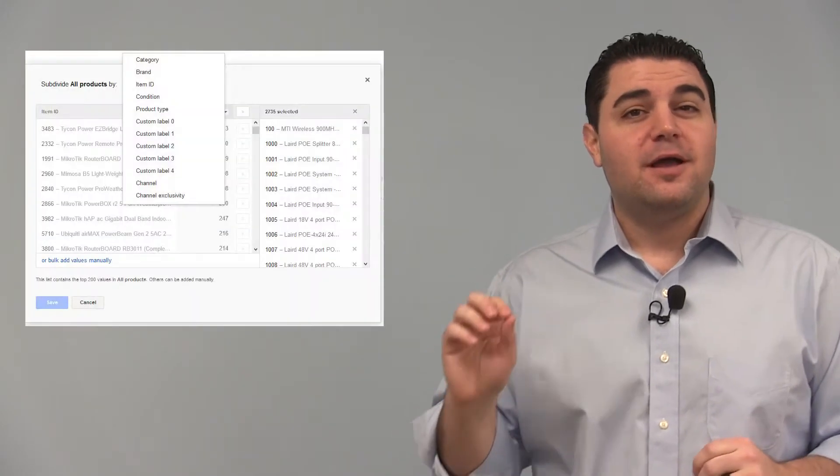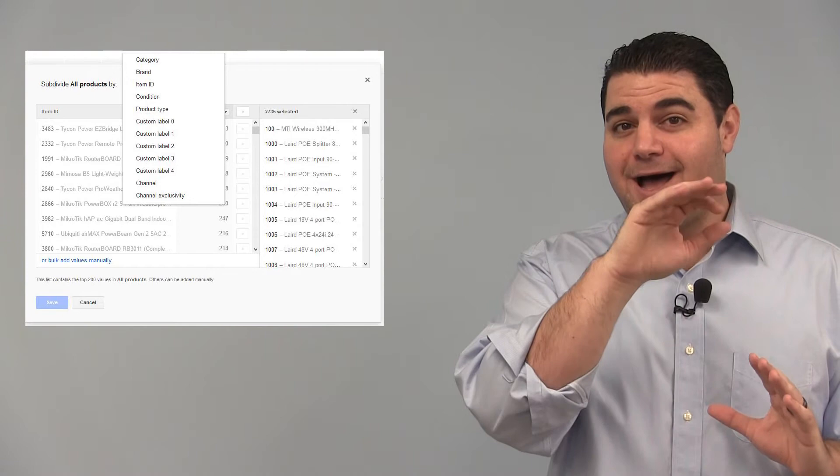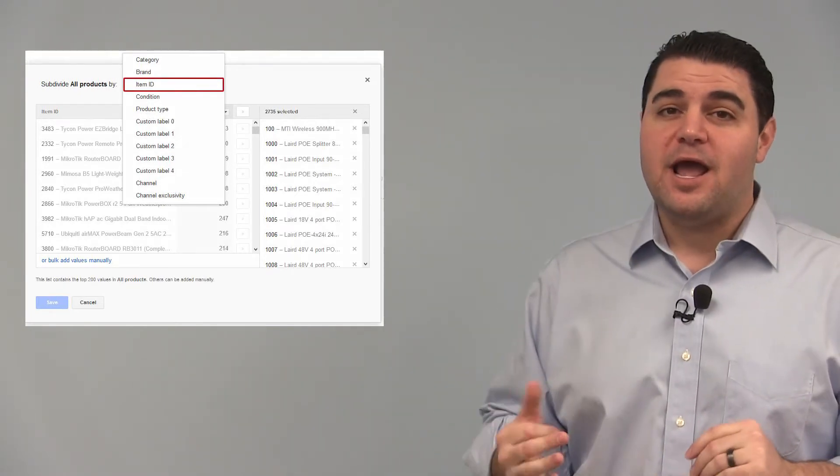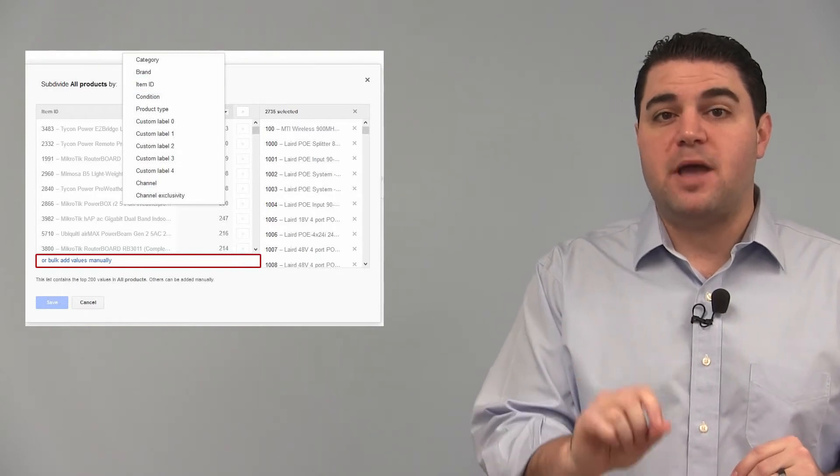Awesome, so we're almost to the end, all we need to do is subdivide our new ad group with our top performing IDs. So now go to your campaign, click little plus icon next to your ad group and you're going to get the subdivide menu. You're going to select at the top to subdivide by item ID and then right at the bottom you can see an option for add bulk values manually.